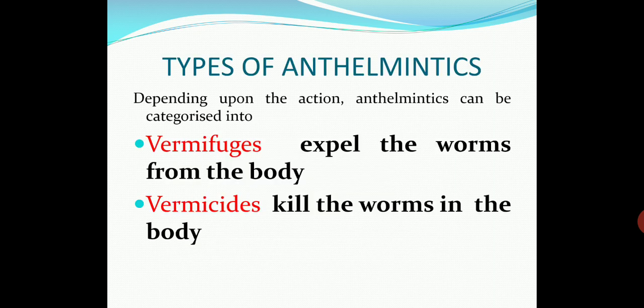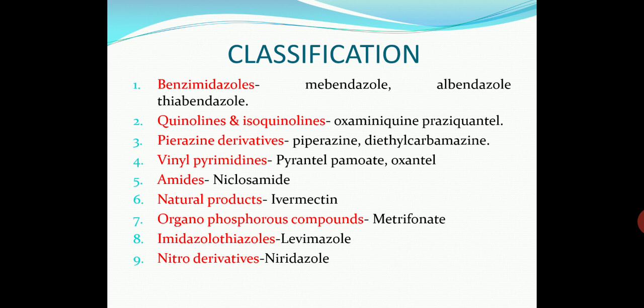Now, depending upon their action, anthelmintics can be categorized into two types: vermifuges and vermicides. Generally, vermifuges expel the worm from the body, whereas vermicides kill the worms in the body. This is similar to the previously discussed bacteriostatic and bactericidal effects.